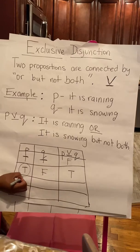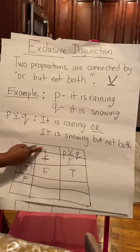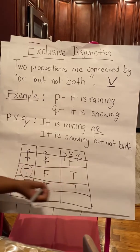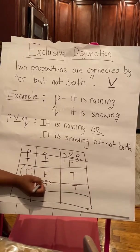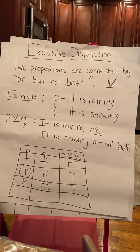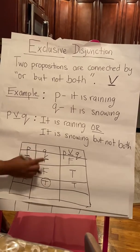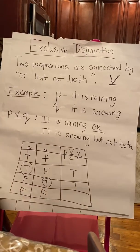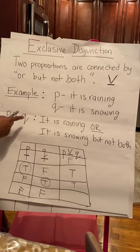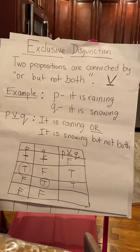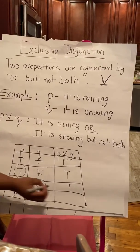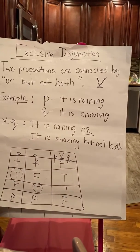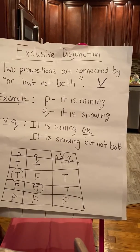Therefore, if P was false and Q was true, that means the whole thing is true because one of the propositions is true. And if both of these statements were false — it's not raining and it's not snowing — that means the whole thing is false because it's not one or the other, and it's also not both.